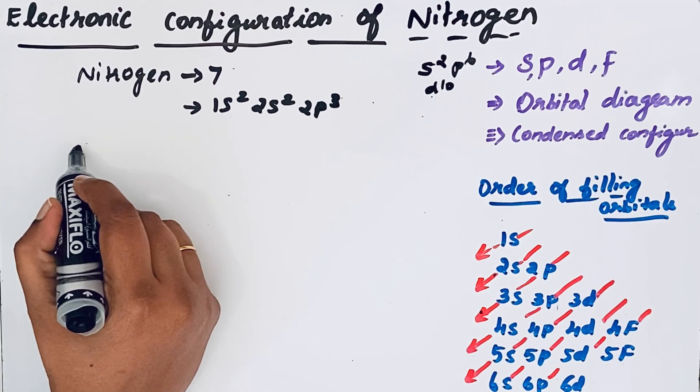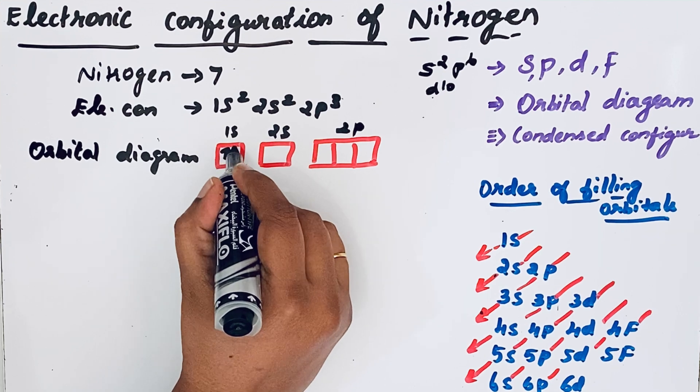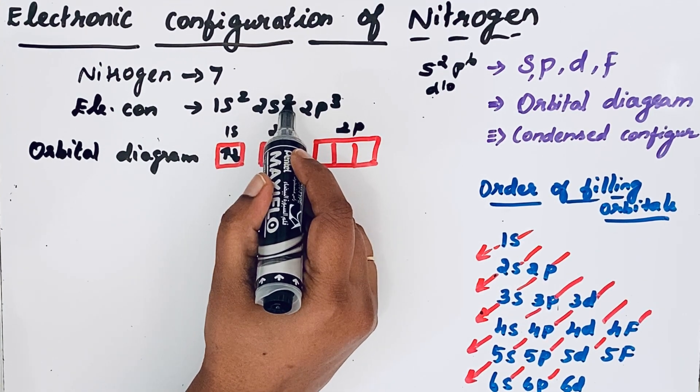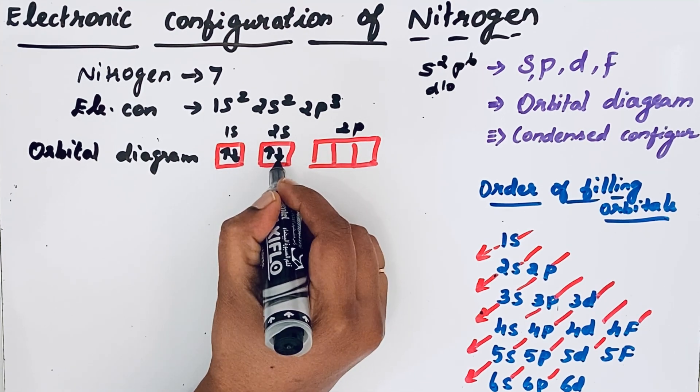Now we will write the orbital diagram. In orbital diagram, orbital is represented as a box. So for 1s orbital there are 2 electrons we are representing by arrow. In 2s orbital, 2 electrons. So one positive spin, another one negative spin.